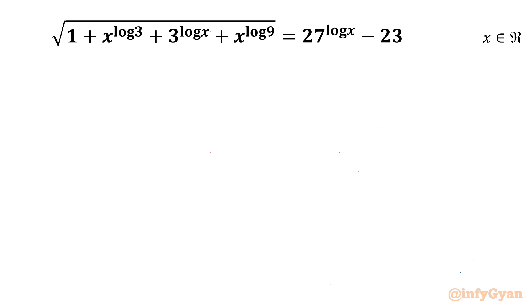Welcome back to Infigyan, my dear friends. In this video we have one very interesting and challenging question from log equations. The given equation is: square root of (1 plus x^(log 3) plus 3^(log x) plus x^(log 9)) equals 27^(log x) minus 23, and we have to calculate real solutions only.